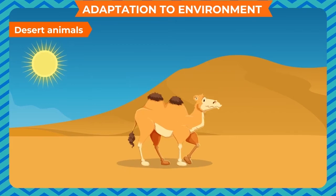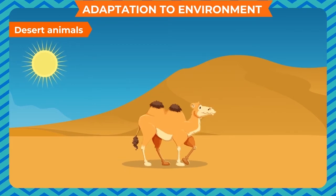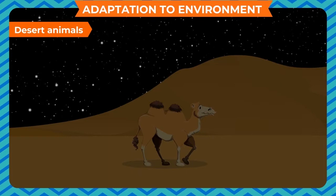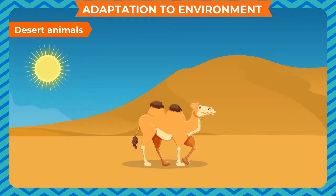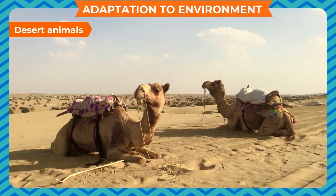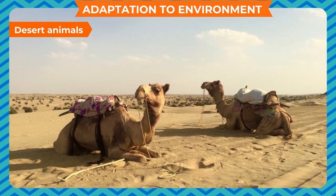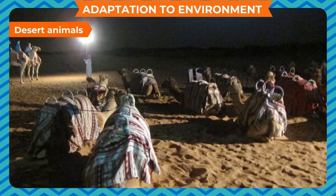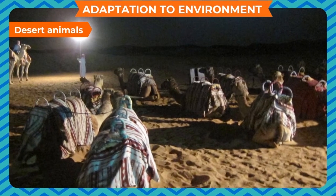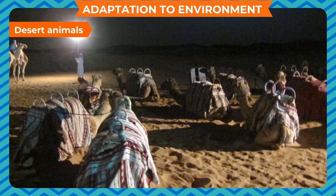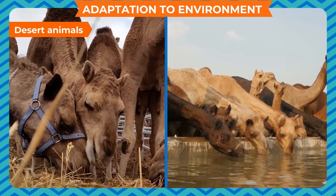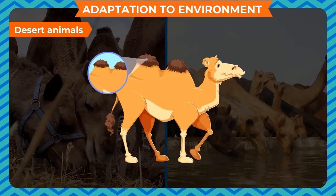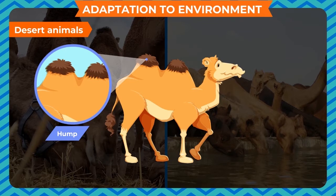Desert Animals. Camels live in deserts. The climate is cold at night and extremely hot in the day. Camels get very little water to drink. The camel is able to protect itself from the extreme heat of the sun during the day and harsh cold during the night because it has several adaptations. It can live without food and water for a very long time. It can live on the fat that it stores in its hump for several days.